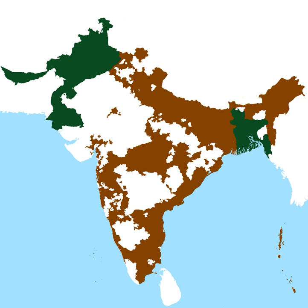The Indian Independence Act 1947 is an act of the Parliament of the United Kingdom that partitioned British India into the two new independent dominions of India and Pakistan.